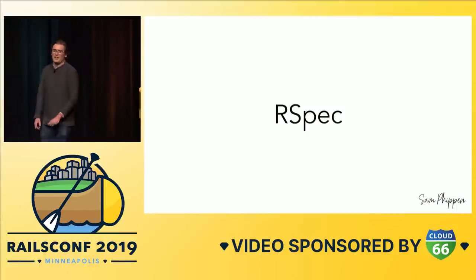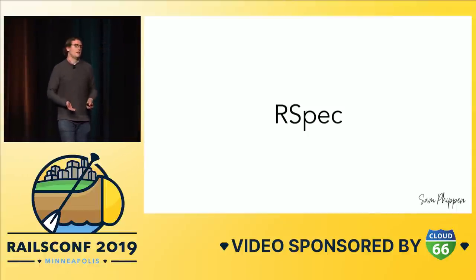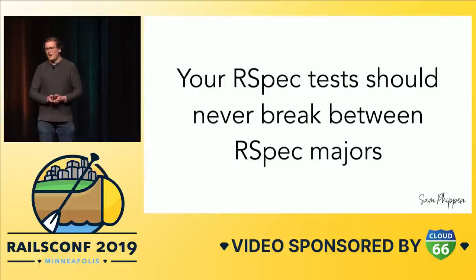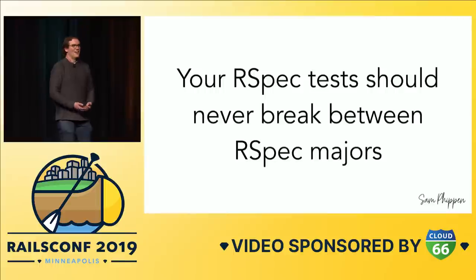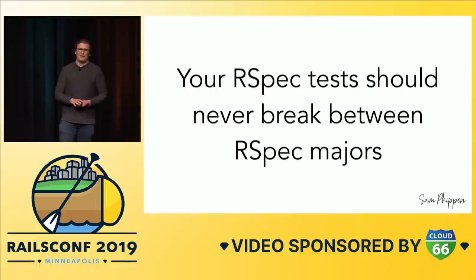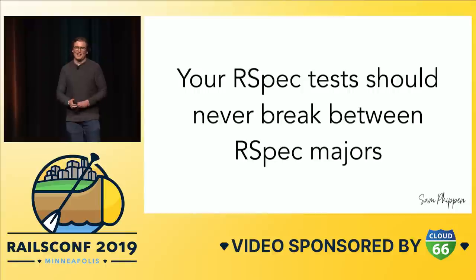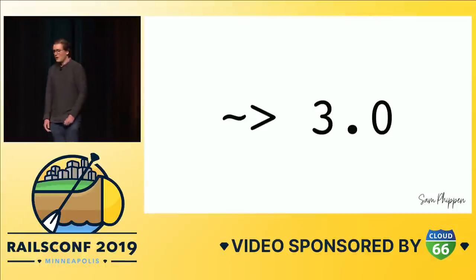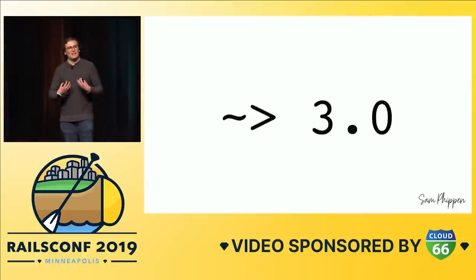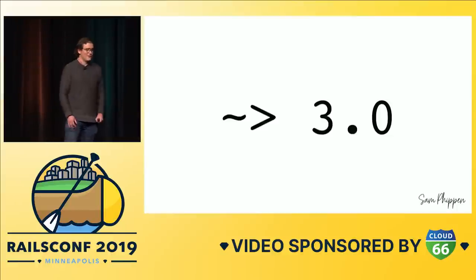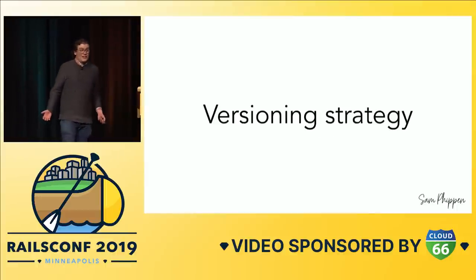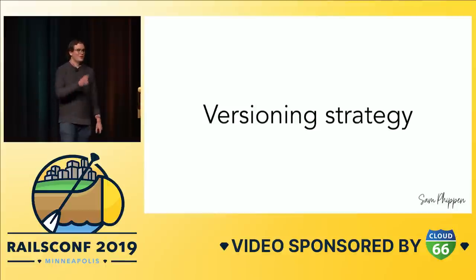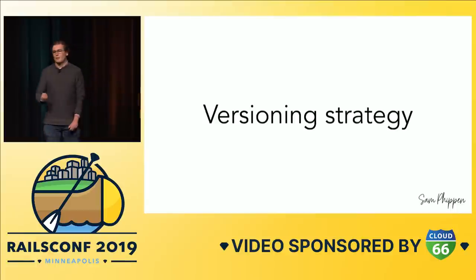I want to talk about how semver applies to RSpec. For the longest time, the semantic versioning guarantee of RSpec has been that between a major, we will never break your tests. That would be a fairly bad thing for a testing framework to do — if you upgraded a minor version and suddenly all of your tests were broken, that wouldn't be great. So in your Gemfile, if you have a pin to RSpec 3.0, what we're saying is that we, the maintainers of RSpec, will not under any circumstances break your tests as long as you're not changing any of the other stuff out from underneath us.